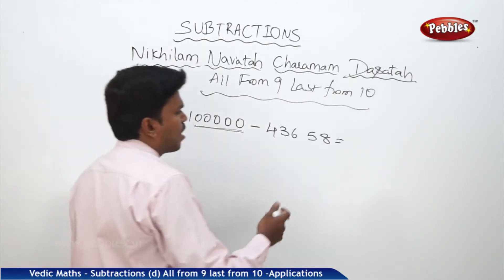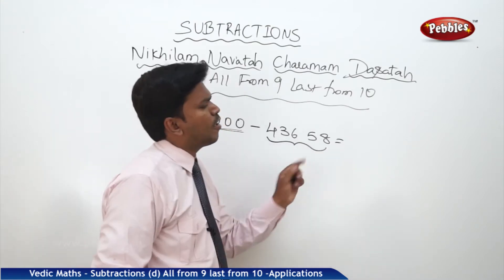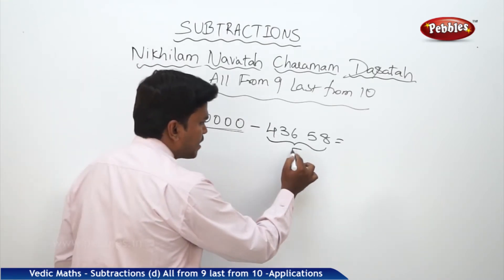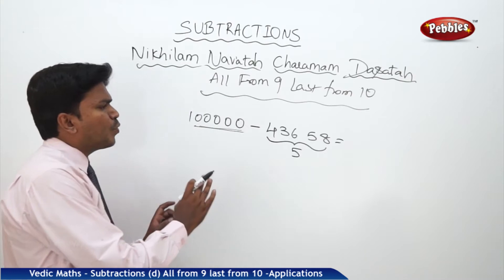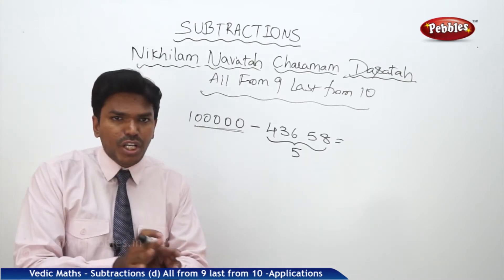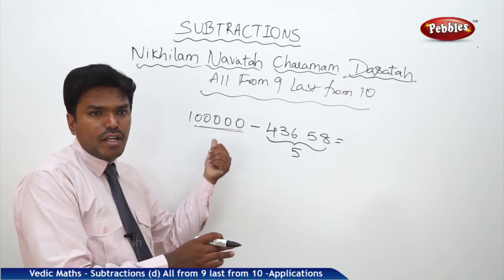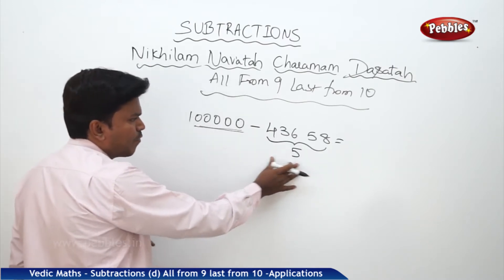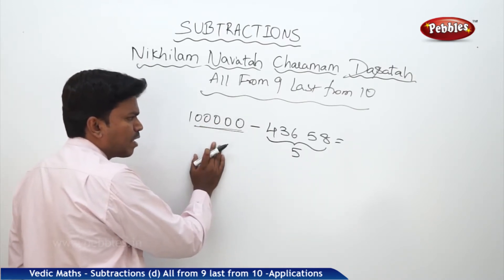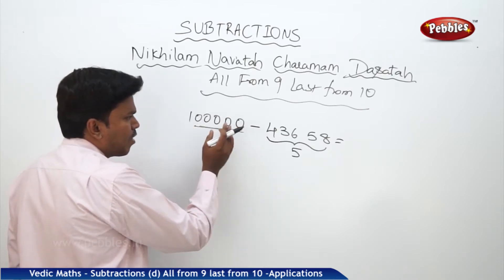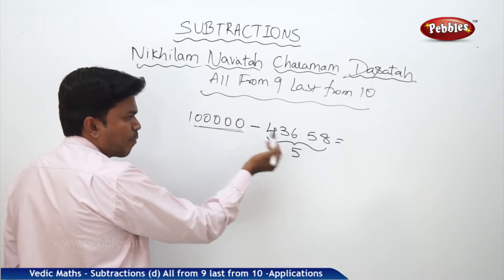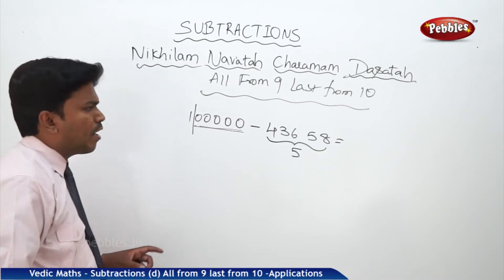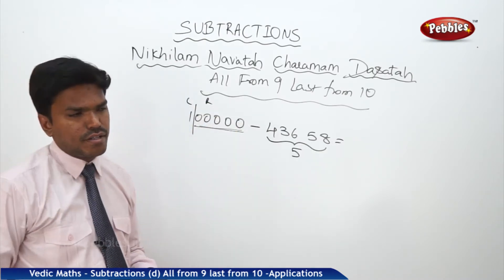Now, you tell me: how many digits are there on the right-hand side, that is in the subtrahend? In this problem there are five digits. So since there are five digits in the subtrahend, we have to do a partition in the given minuend from the right end — five digits from the right. One, two, three, four, five — and we make a partition like this. Now the number is divided into two parts: left and right.